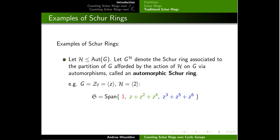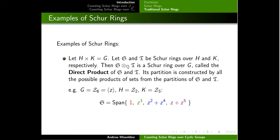We can build partitions using automorphisms: if we have a subgroup of the automorphism group, it acts on the group via that automorphic action, and the orbits associated to that group action form what we call an automorphic Schur ring. For example, if you take the cyclic group of order seven and take powers of two, which is an automorphism, you get the following three-celled automorphic Schur ring.